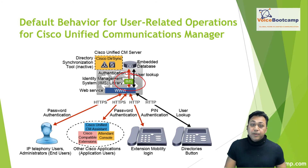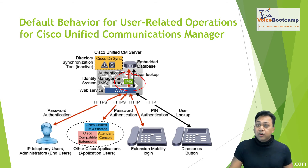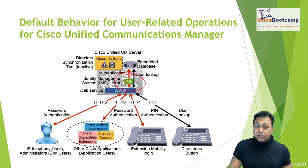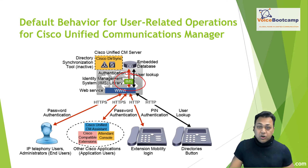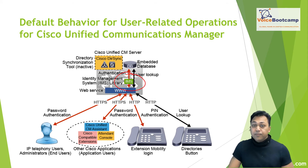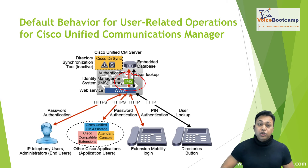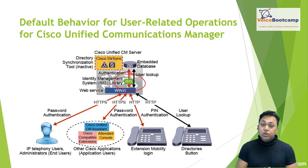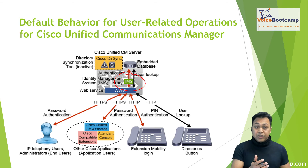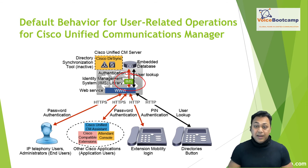End users may also authenticate with their username and numeric password or PIN number when logging into Call Manager features like extension mobility from an IP phone or auto attendant console. In this case, authentication will be challenged by the IMS. Additionally, user lookups performed by Cisco collaboration endpoints via the directory button on the phone are also accessed from the embedded database.